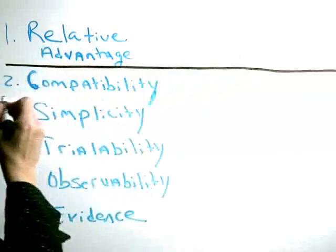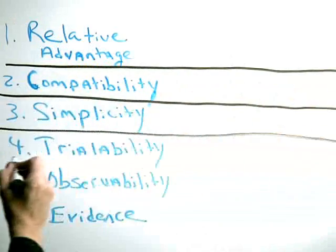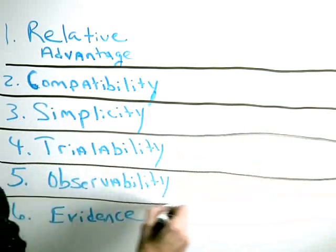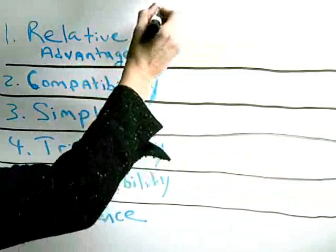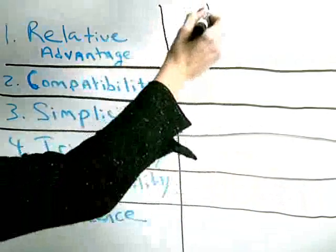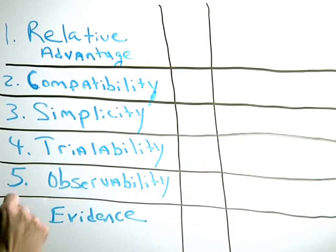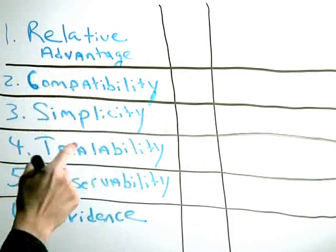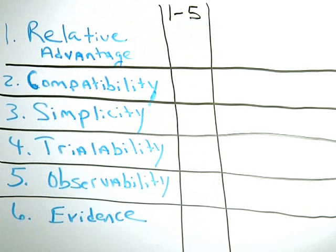First thing that I'm going to do is actually draw a matrix. And in the first column, I'll have the characteristics. And in the second column, I'm going to leave some space so that we can actually rate our idea of rapid response teams against these characteristics. And we'll do that on a scale of 1 to 5, 1 being low, high being 5.